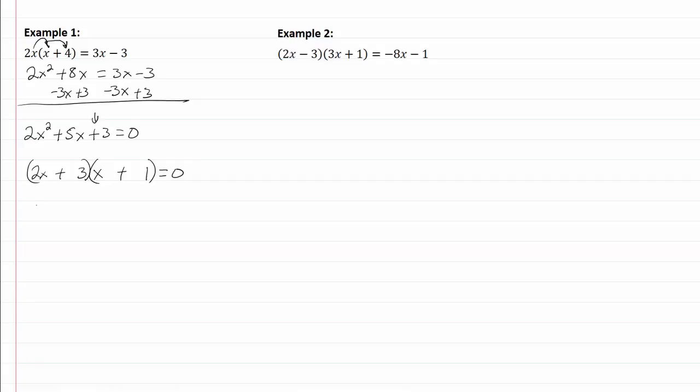Set it equal to zero and now I have 2x plus 3 equal to zero and x plus 1 equal to zero. Solving the first equation, I'm going to subtract 3 from both sides. I get 2x equal to negative 3, divide by 2 and x equals negative 3 halves.